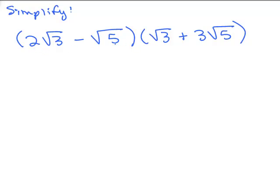So I have 2 square root of 3 times square root of 3 — the 2 is on the outside, and square root of 3 times square root of 3 gives just 3. For the outer term, 2 square roots of 3 times 3 square roots of 5: I have 2 times 3 which gives me 6, and then square root of 3 times square root of 5 multiply together to get square root of 15.